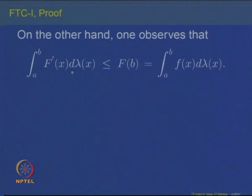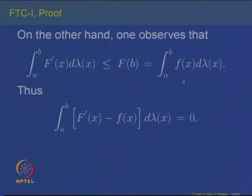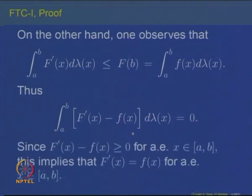Taking the limit as n→∞ gives F'(x) ≥ f(x) for almost all x. But from the lemma for monotone functions, the integral of F' is less than or equal to F(b) − F(a) = integral from a to b of f(x) dλ(x). Therefore the integral of [F'(x) − f(x)] over [a,b] equals 0. Since F' − f is a non-negative function with integral zero, it must equal zero almost everywhere. Hence F'(x) = f(x) for almost all x in [a,b], completing the proof of the fundamental theorem of calculus Part 1.